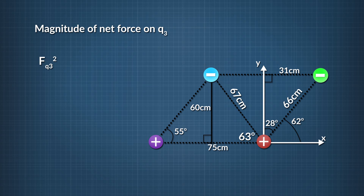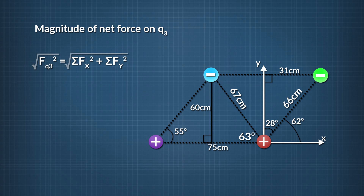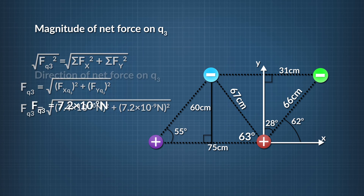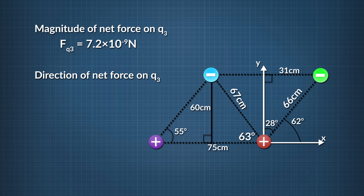By the Pythagorean theorem, the total electric force acting on q3 squared equals the sum of the x components of force squared plus the sum of the y components of force squared. Taking the square root of both sides and plugging in the x and y components, we find that the total electric force on q3, rounded to two significant figures, equals 7.2 times 10 to the negative ninth newtons.